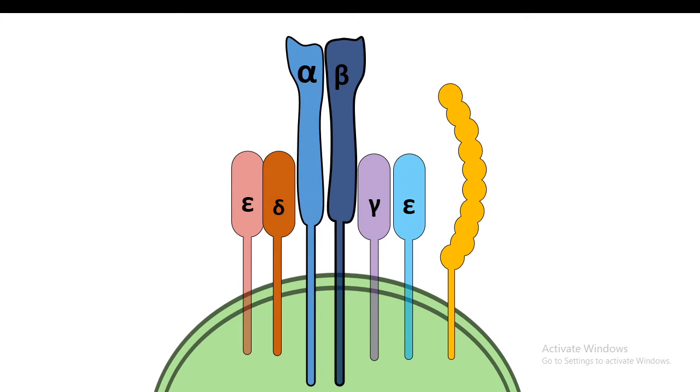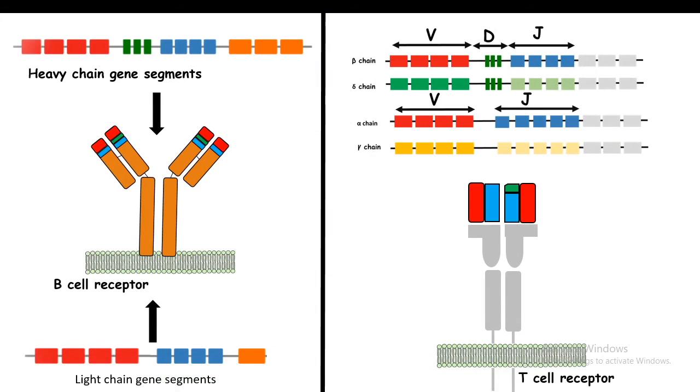If we look at the TCR gene segments, just like the BCR gene segments, they are also having VDJ segments. The alpha-beta chain of the TCR is directly in contact with the antigen. As a result, the alpha-beta gene segment is undergoing VDJ recombination, and that's the point for diversity. Just like the B cell receptor heavy chain and light chain gene segments, we have T cell receptor alpha, beta, gamma, and delta gene segments which have VDJ components.